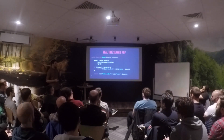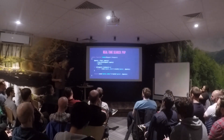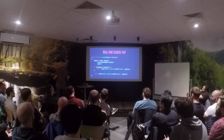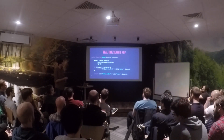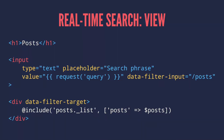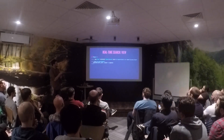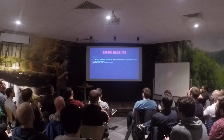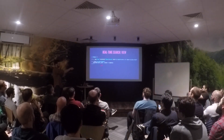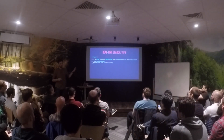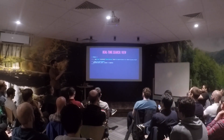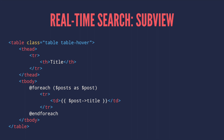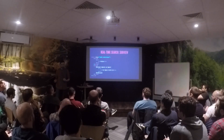We are going to be using this endpoint for both synchronous and asynchronous requests. This is how your index view might look: you have your heading, the search field, and then you include the subview. You want to do that because conditionally you want to return just that part, and it's way easier to do it this way. The subview is a basic table that just renders a list of posts, nothing else.